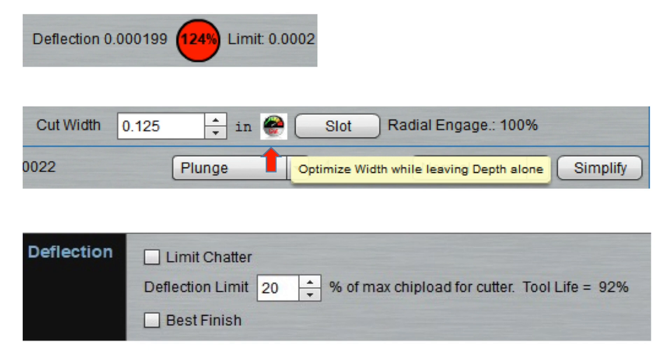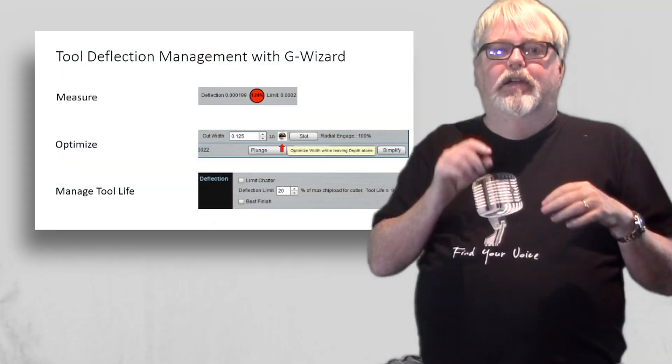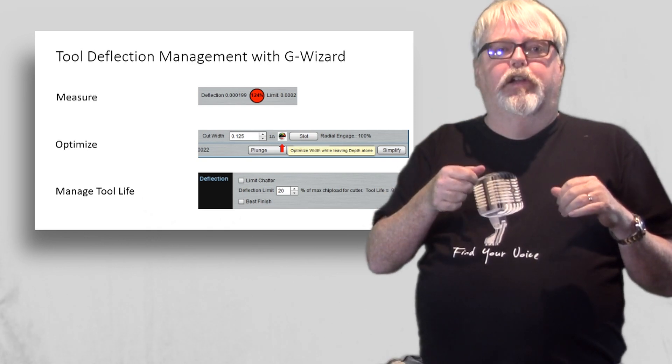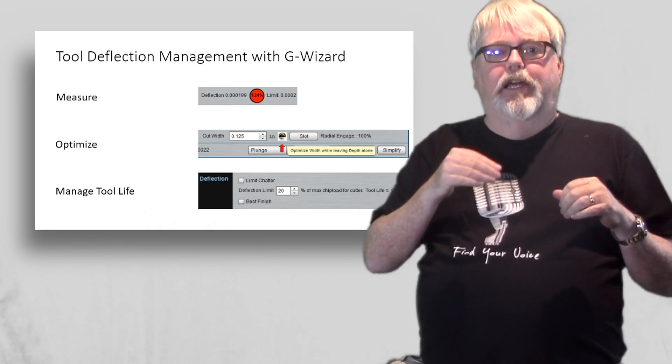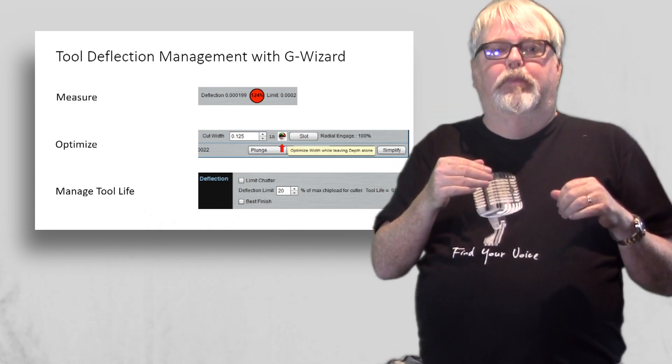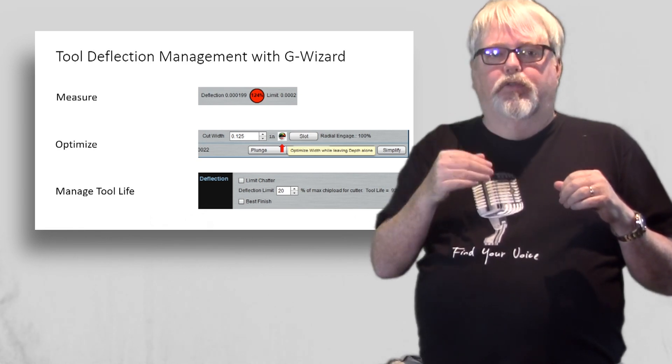Second, you'd like to make it easy to optimize away tool deflection by reducing the cutting depth, cutting width, or feed rate in the cut. Ideally, you want to just make one click in your calculator and have it tell you exactly how much cut depth, for example, to keep you within your deflection limit.